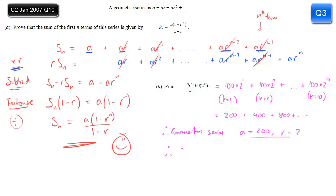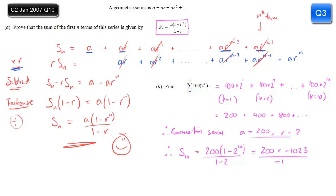To find the sum, I can use the formula proved in part a, with a as 200 and r equals 2. So the sum is 200 times 1 minus 2 to the power 10, divided by 1 minus 2. 1 minus 2 to the power 10 is minus 1023, divided by minus 1, giving 204,600. And that is the answer to part b.